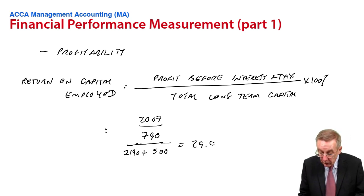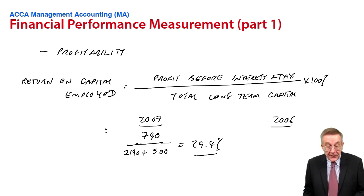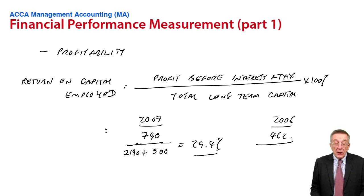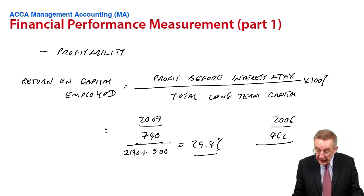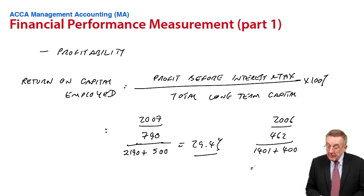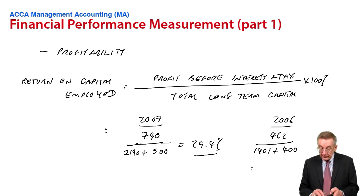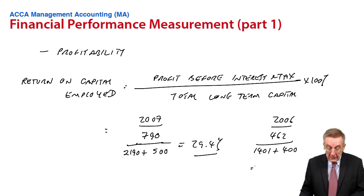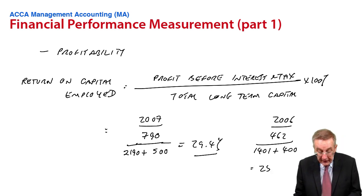It's 29.4%, whereas in 2006, the profit from operations is 462. The total long-term finance, share capital, 1401, non-current liabilities is 400. So in percentage terms, 25.7%.